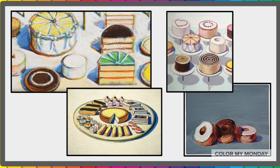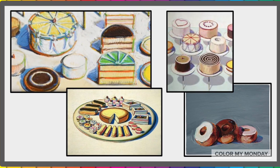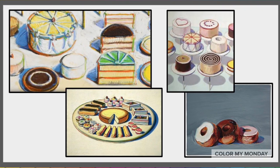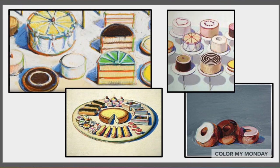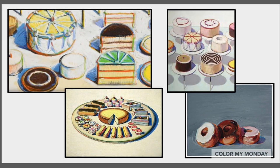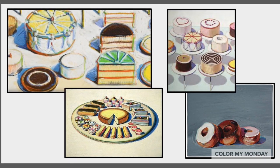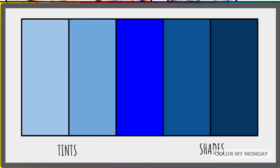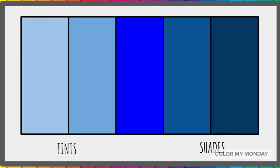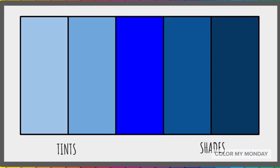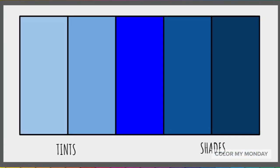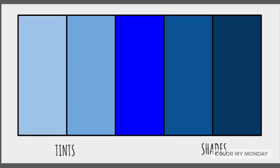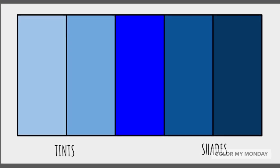To create the light and shadows in his paintings, Wayne Thiebaud uses the element of art called value. Value is the range of light to dark in a work of art. You can create tints by adding white to a color, and shades by adding black or darker hues to a color.